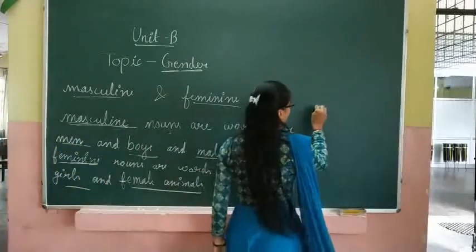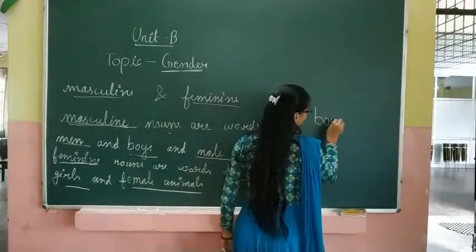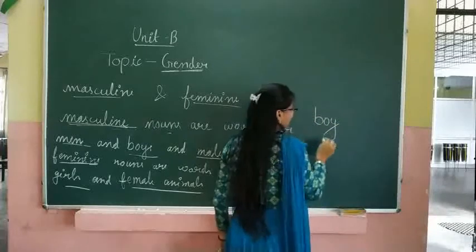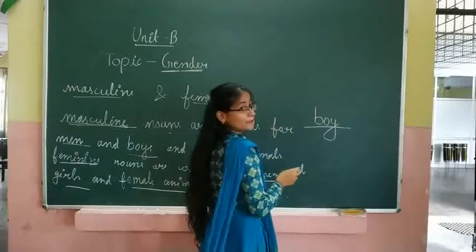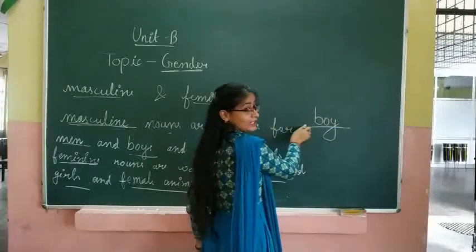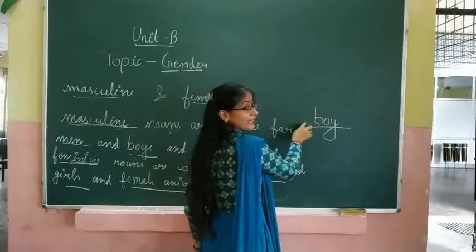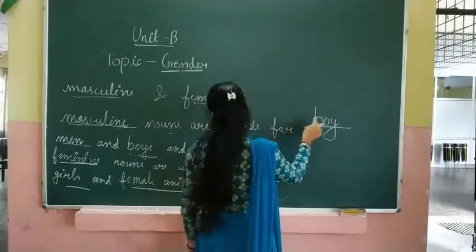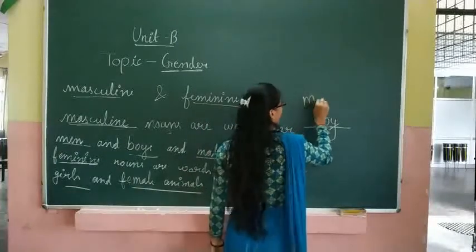Like for example, here we are going to write 'boys'. Boy is masculine — boy is male. Men, male animals, and boys are masculine.